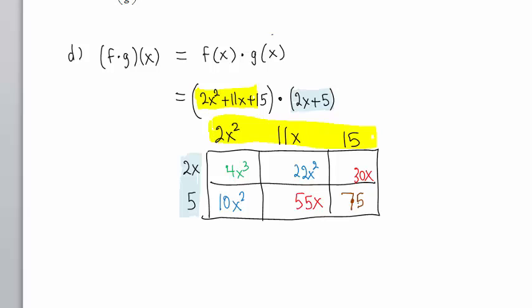Now we gather like terms. We have 4X to the third. These are both positive and like terms. Adding, we get 32X squared, so we write plus 32X squared, plus 85X plus 75.